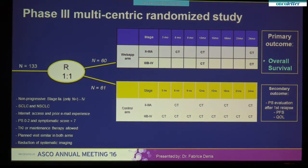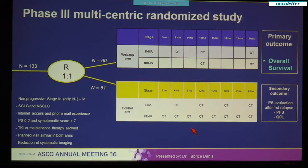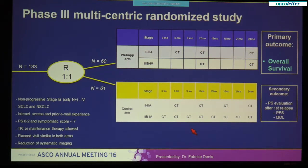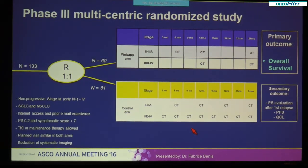We compared it in this phase three multicentric trial to usual non-personalized follow-up that used numerous imaging by CT scan. It was conducted in five academic and private centers in France. Eligible patients had non-progressive, high-risk lung cancer. They must have internet access, PS less than three — that means good to average general health status — and an initial symptomatic score less than seven, which means low or moderate symptom intensity regarding asthenia, breathlessness, cough, pain, and anorexia.